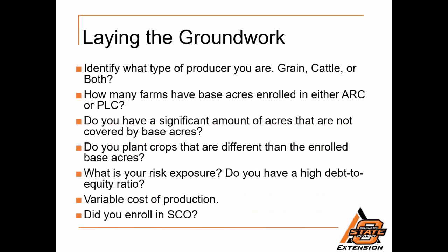For laying the groundwork, in order to determine what kind of crop insurance you need, a producer must identify what type of producer they are. Are they primarily grain, cattle, or both? Also, how many farms have base acres enrolled in either ARC or PLC? The Farm Bill Commodity Program election will have a big effect on what kind of crop insurance they need. Agricultural risk coverage is a revenue protection product that provides shallow loss coverage, whereas price loss coverage is only a price protection product that will not protect against losses in yield.